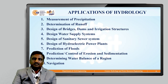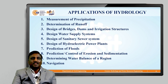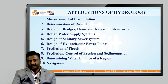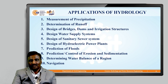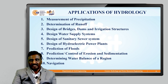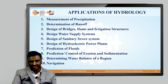Next, we will discuss why civil engineers study hydrology — the applications of hydrology. Hydrology is very important for civil engineers for the following reasons: measurement of precipitation, determination of runoff, design of bridges, dams and irrigation structures, design of water supply systems, design of sanitary sewer systems, design of hydroelectric power plants, prediction of floods, prediction and control of erosion and sedimentation, determining water balance of a region, and navigation.